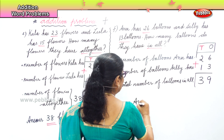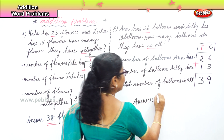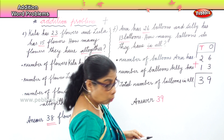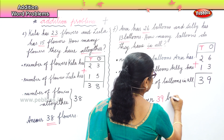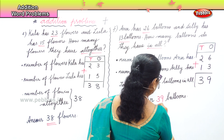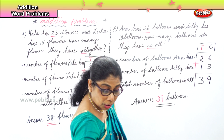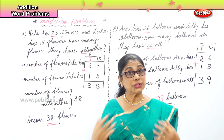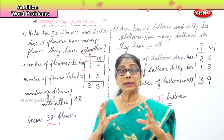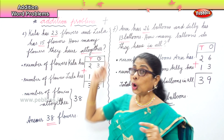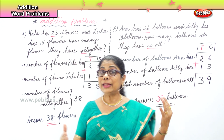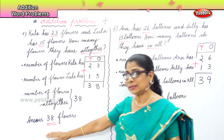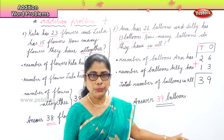So what is the total number of balloons in all? Thirty-nine. The answer is thirty-nine balloons in all. We learned to do word problems in addition — story problems in addition — looking at words like 'some,' 'all together,' and 'in all.' We learned to add the ones first and then the tens, and we learned to write the answers.